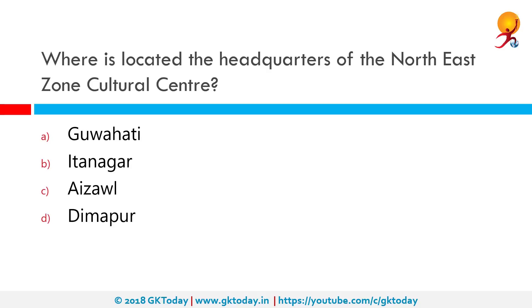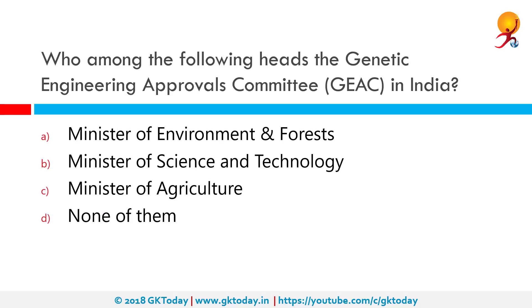North East Zone Cultural Centre is Dimapur. Eastern Zone Cultural Centre is Kolkata. South Zone Cultural Centre is Thanjavur. South Central Zone Cultural Centre is Nagpur. So the answer for North East Zone is Dimapur.